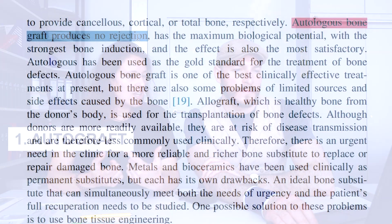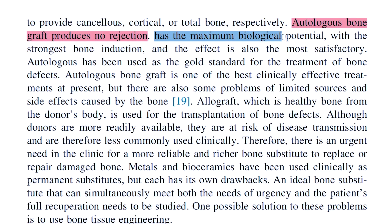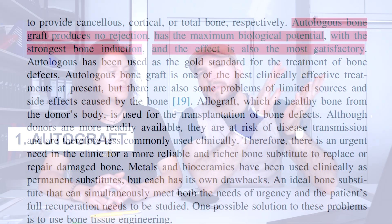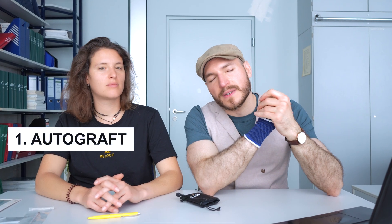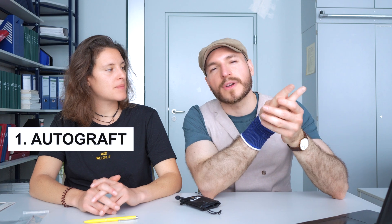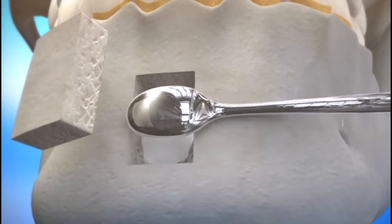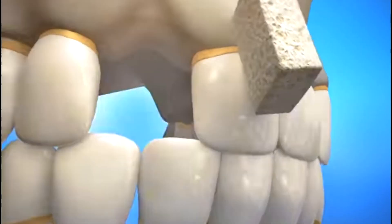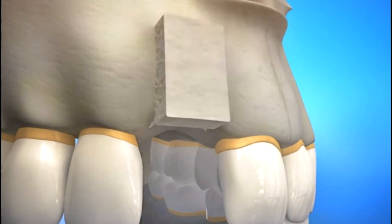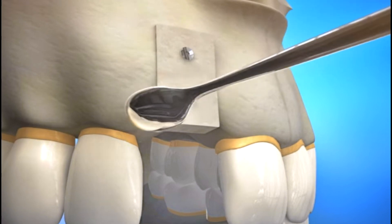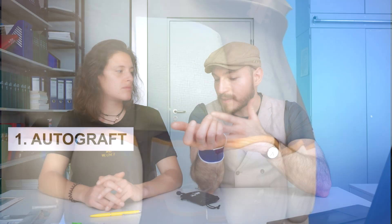We need something to bridge the gap between the two disconnected parts of the bone. We can use autologous bone grafts, which come from our own body. They produce no rejection, have the maximum biological potential with the strongest bone induction, and the effect is the most satisfactory. However, they require two operations for the same person, since that person is both giving and receiving the graft. The surgeon has to open a different site, remove the graft, and implant it elsewhere — which can cause complications.